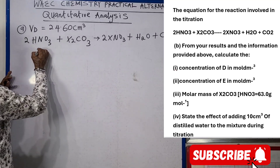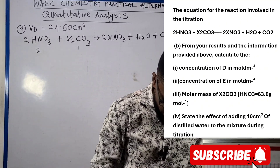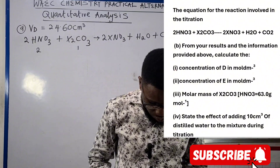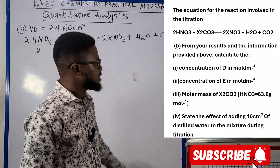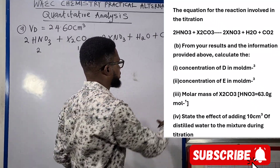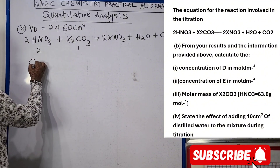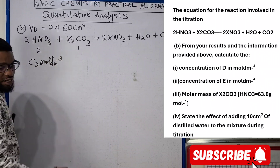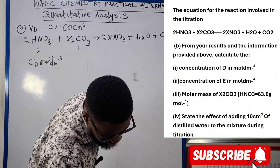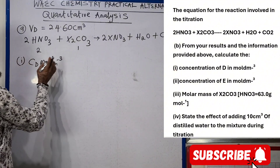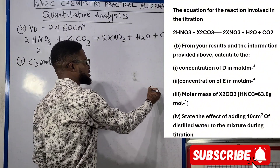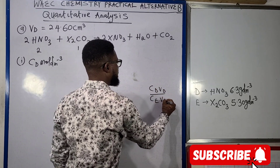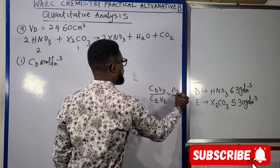From the equation, the mole ratio is 2 to 1 — that's exactly what we have in the question. From your results and the information provided, calculate the concentration of D in mole per dm³. We're looking for the concentration of D in mol/dm³ — that's Roman numeral (i).